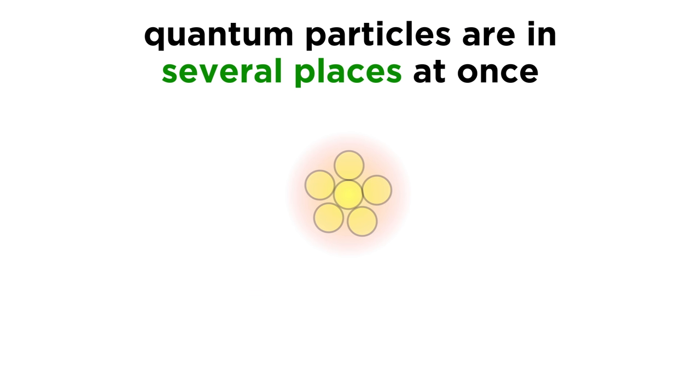As we mentioned, quantum particles don't behave like this. They are in several places at the same time, at all times, and we need to represent this mathematically somehow.